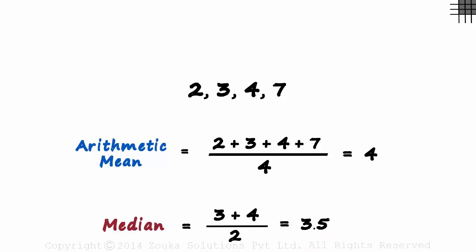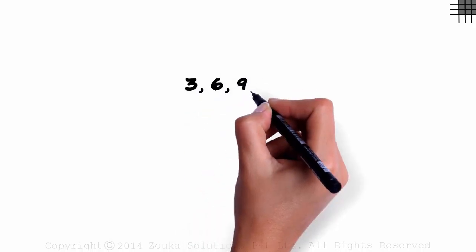Can the mean and the median be different for evenly spaced numbers? Let's consider the number set 3, 6, 9, and 12. We have a fixed increment of 3. What is its arithmetic mean?